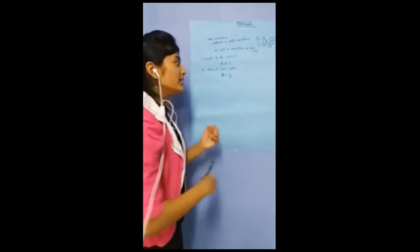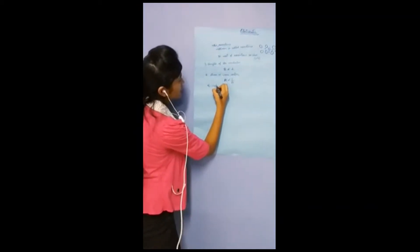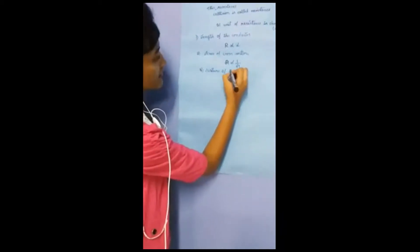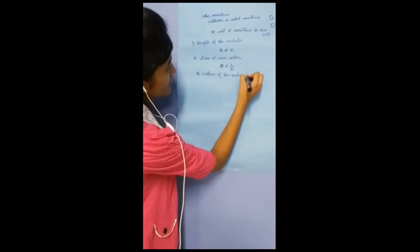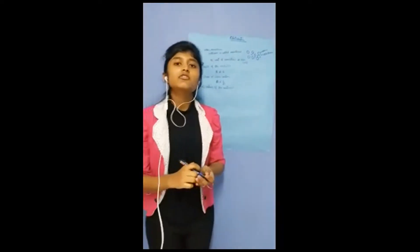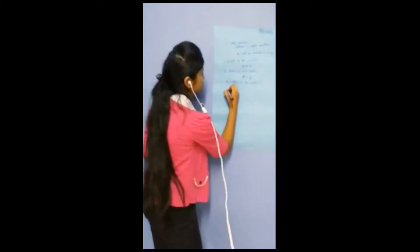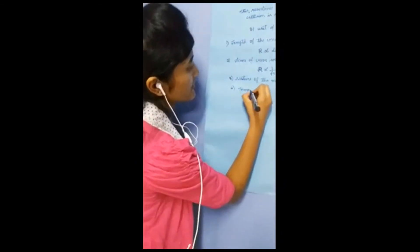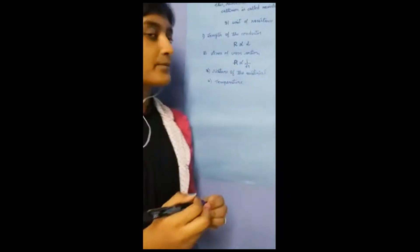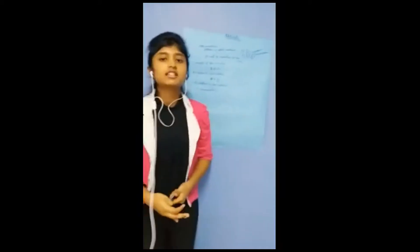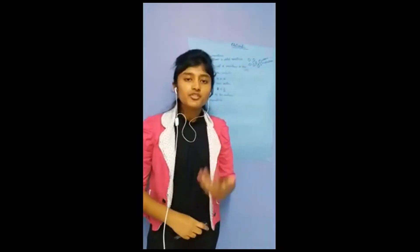The third factor is nature of the material, because some wires will have high resistance and some wires will be made of low resistance material. So resistance also depends on the nature of the material. The last factor is temperature. As the temperature increases, the resistance also increases, because the electrons move faster and collisions increase, raising resistance. If the temperature decreases, the resistance also decreases.